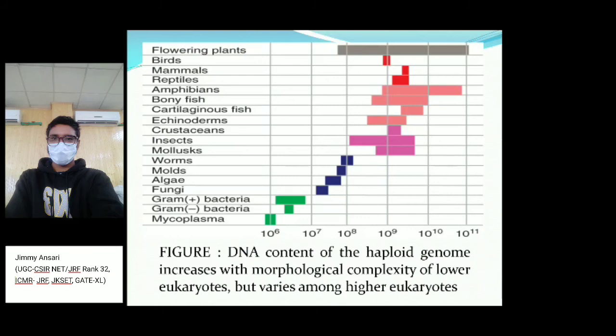In lower organisms like mycoplasma, bacteria, and worms, when complexity increases the amount of DNA also increases proportionally. However, in haploid eukaryotic cells, morphological complexity and DNA amount do not correlate in the same way — when the amount of DNA increases, complexity does not necessarily increase. This non-correlation in eukaryotes is called the C-value paradox.